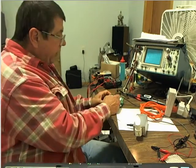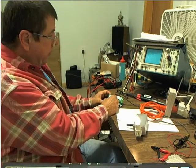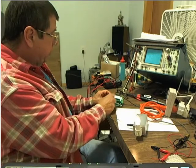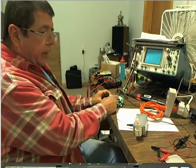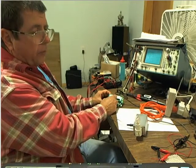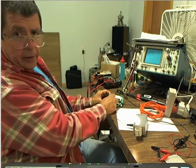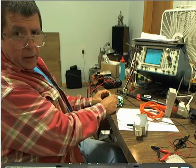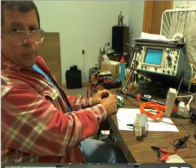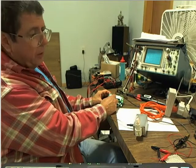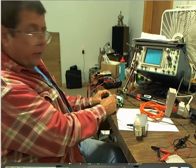It's set at the duty cycle right now at 10%. I can drop it all the way back down. Now it's a solid dim glow, and it gets brighter as I turn it up. That's 1%. Very, very dim. 2%, 3%, 4%.